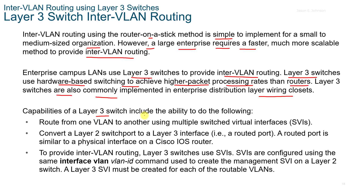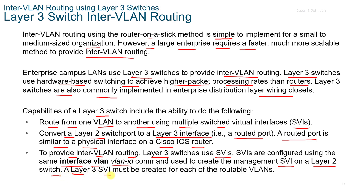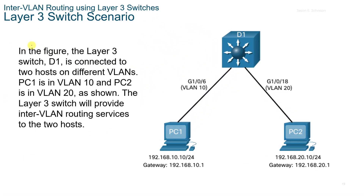Layer 3 switches use SVIs configured using the same interface VLAN ID command used to create the management SVI on a Layer 2 switch. A Layer 3 SVI must be created for each of the routable VLANs. In this scenario, Layer 3 switch D1 is connected to two hosts on different VLANs — PC1 is in VLAN 10 and PC2 is in VLAN 20 — and D1 provides inter-VLAN routing services to both hosts.